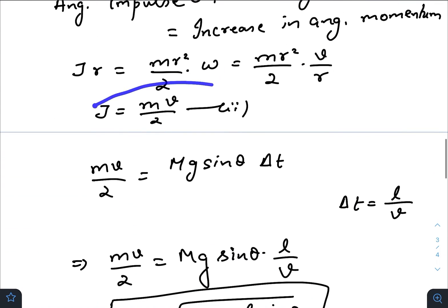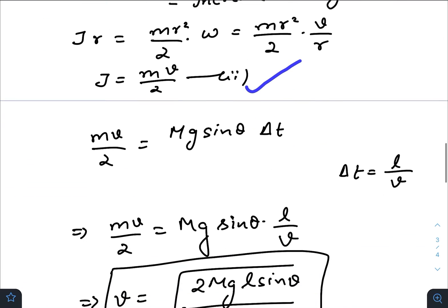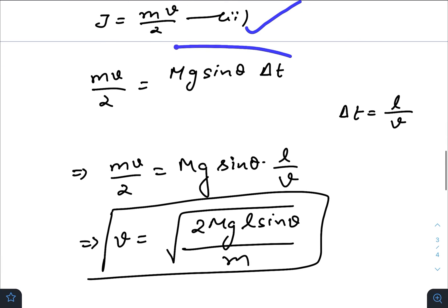We get the value of angular impulse. Now just put the value of angular impulse in this equation, we get this expression. Now what is Δt?